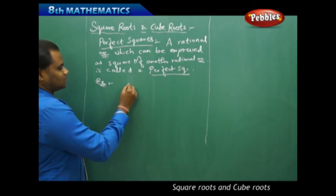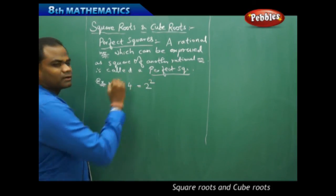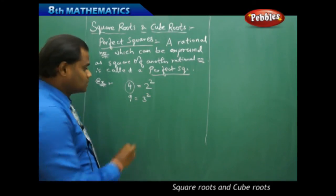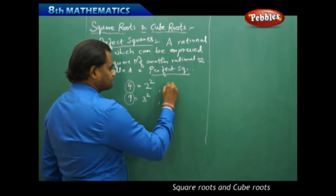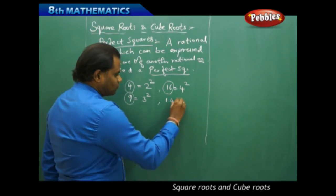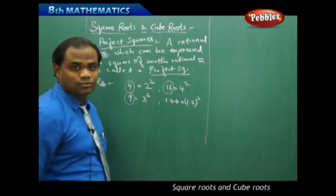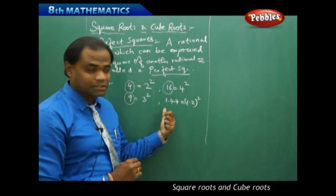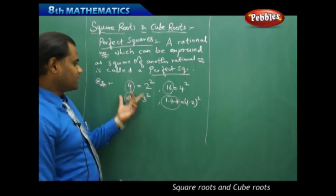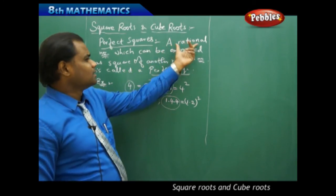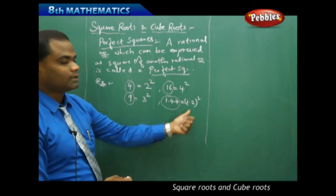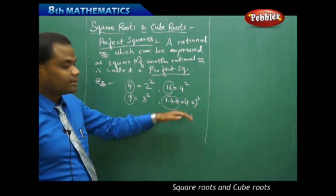For example, I have 4, which I can write as 2 squared, so 4 is a perfect square. Next, 9 can be written as 3 squared, so 9 is a perfect square. I have 16, which I can write as 4 squared, so 16 is a perfect square. I have 1.44, which I can write as 1.2 whole squared because 12 times 12 is 144. So 1.44, which is a decimal or rational number, can be expressed as 1.2 whole squared, making it a perfect square. These are various examples of perfect squares where a rational number is expressed as the square of another rational number.